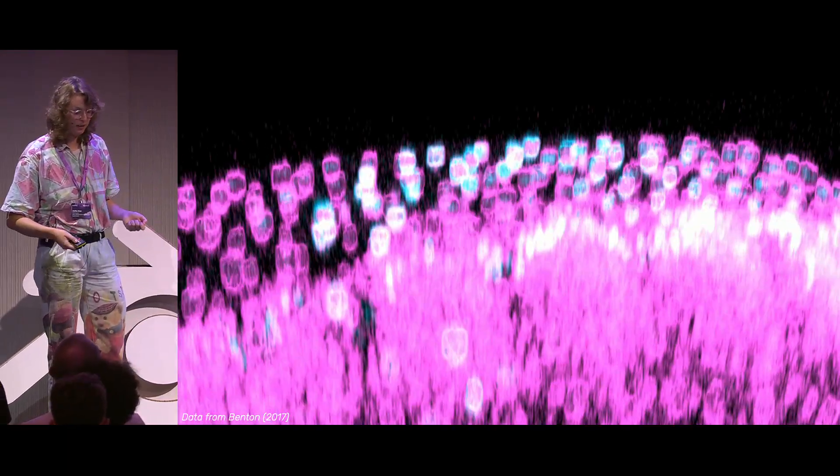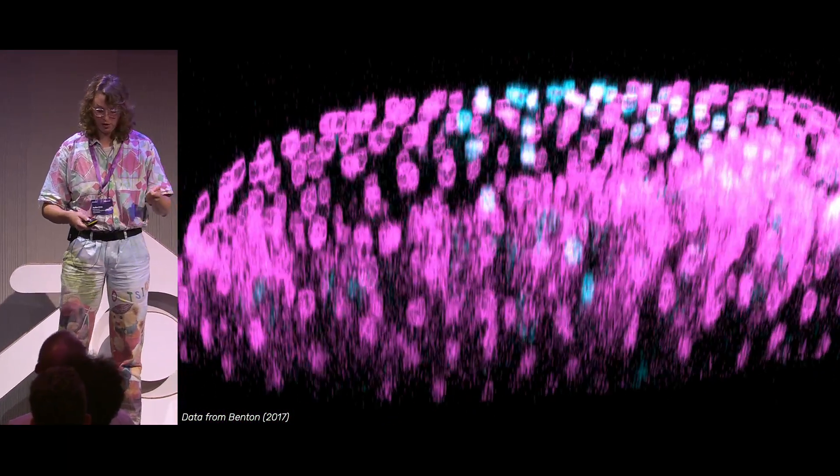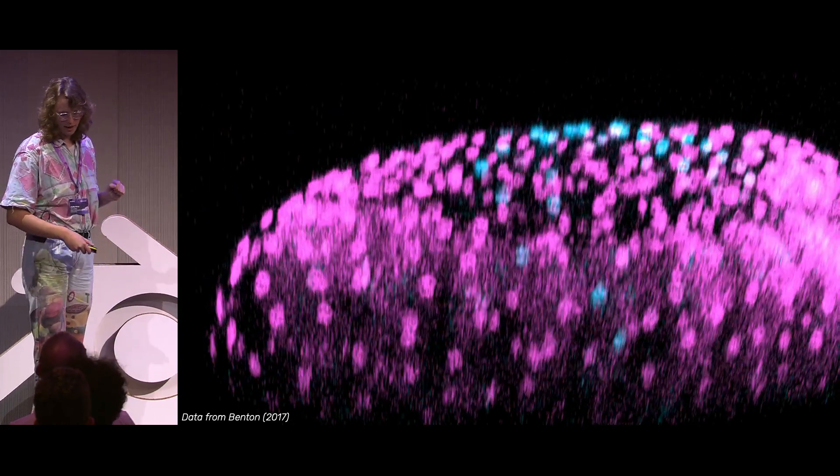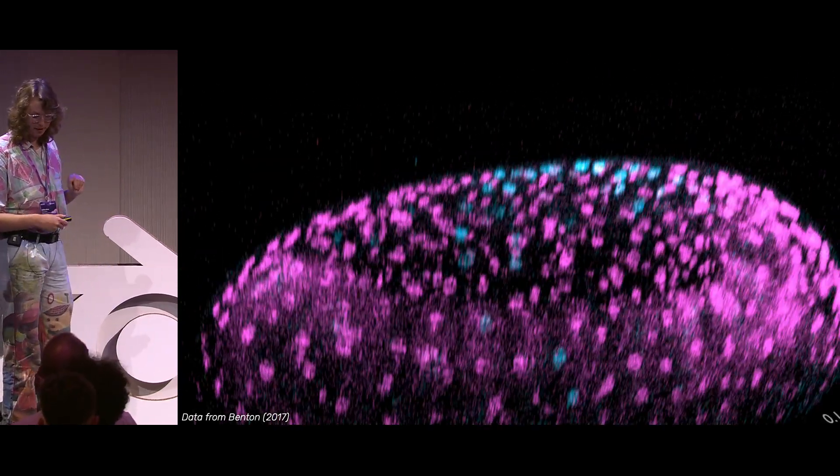Similarly, a different question that a lot of people are interested in is development. How do we go from a single cell, a single nucleus, to lots of different ones with a full body plan? This actually requires us to do this time-based imaging where we have 3D, multiple channels, and time, and so this is a developing beetle embryo where we have different cells labeled in pink and cyan.